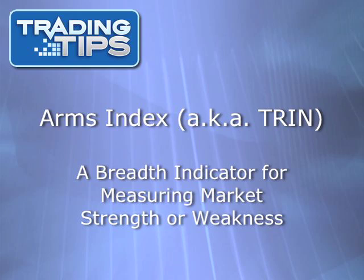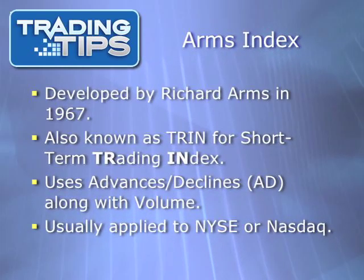The Arms Index relies on two other statistics: the advance/decline ratio and the advance/decline volume ratio, which we'll also be covering. The Arms Index gets its name from its developer, Richard W. Arms, who invented the indicator in 1967. The other name, TRIN, comes from 'short-term trading index.' It is usually applied to either the NYSE or the NASDAQ, but can also be applied to indexes such as the S&P 500.